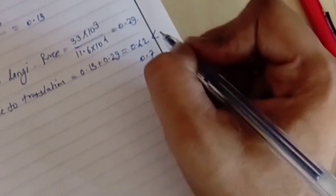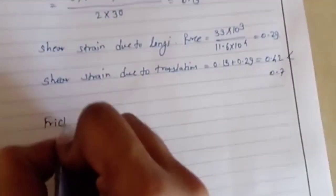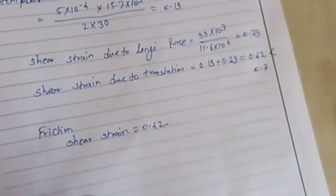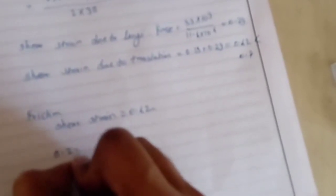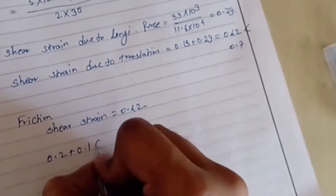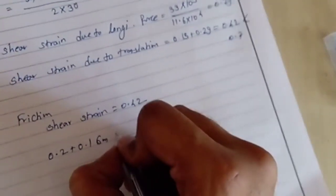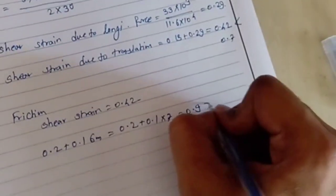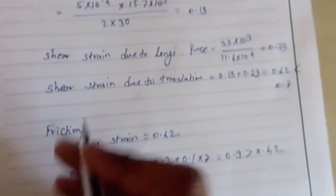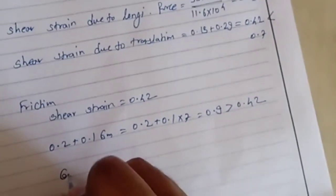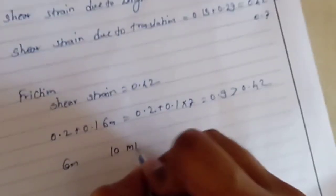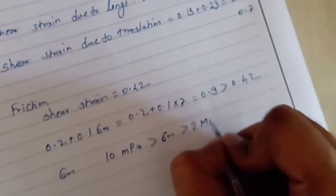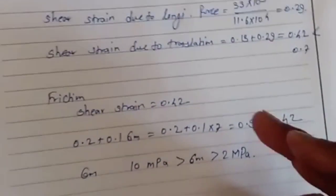Friction shear strain is 0.42 as calculated above. So now we have the formula: 0.2 plus 0.1 into sigma m, which is calculated earlier, equals 0.2 plus 0.1 into 7, that is sigma m, which is 0.9, greater than 0.42. According to IRC, sigma m should be satisfied: 6.5, which is between 10 MPa to 2 MPa. This condition is given in IRC 83 part 2.